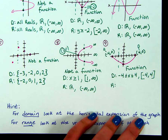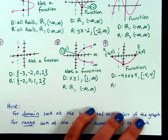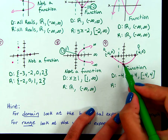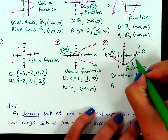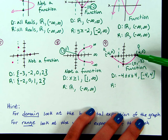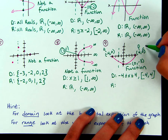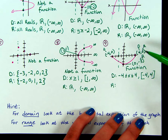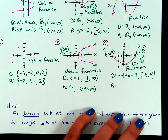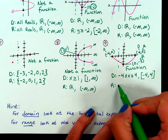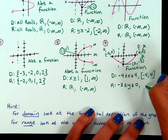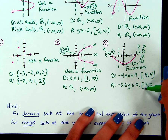For range, that's our vertical expansion. There are no arrows on the graph, so it's not going up and down forever — it's stopping at these two points. The lowest point is at 0, negative 3. As I trace along the graph, all of my y values are going to be between 0 and negative 3. So we're going to have another inequality: negative 3 less than or equal to y, less than or equal to 0. In interval notation, smallest number is negative 3, biggest is 0, and both are included with brackets.